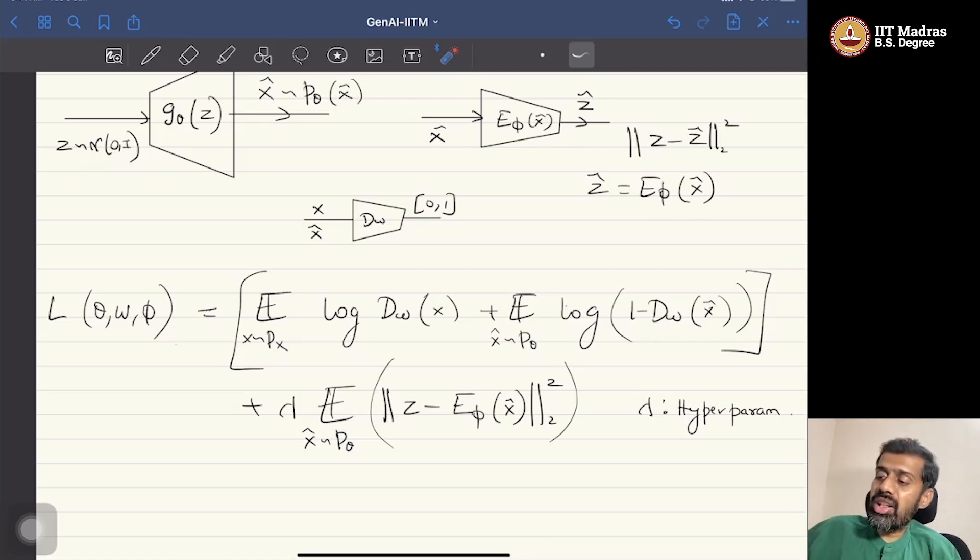So why is it called regressor? Because this encoder network is effectively regressing over the input data points or input latent vectors. So we add a regression task or a regression cost to the naive GAN cost and train the encoder.